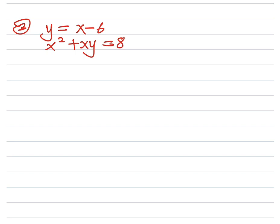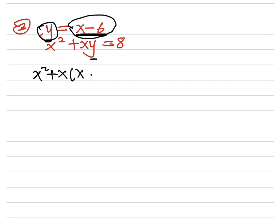Let's look at another question. In this case, y is not equal to another y, so we use substitution — wherever we see y, we input the definition of y into the second equation. This gives us x² + x(x − 6) = 8. Expanding the bracket, we get x² + x² − 6x = 8.